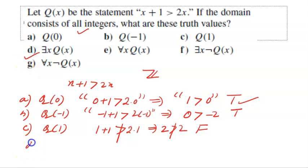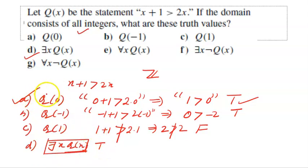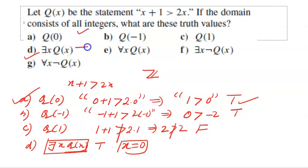For ∃x Q(x): this is true when some value of x makes Q(x) true. We already saw that Q(0) is true, so ∃x Q(x) is true — we only need one value of x for which Q(x) holds. For ∀x Q(x): this is a false statement.